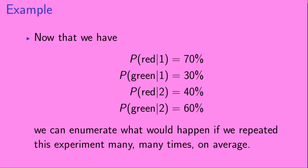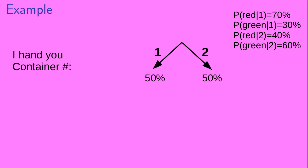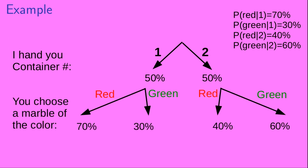Now that we have those four conditional probabilities, we can enumerate what would happen if we repeated this experiment many, many times on average. We've put those four results up in the upper right-hand corner because we'll need them in a minute. Out of all of the trials, I hand you container 1 50% of the time, and I hand you container 2 50% of the time. Of those instances in which I hand you container 1, you choose a red marble 70% of the time and a green marble 30% of the time. Of those instances in which I hand you container 2, you choose a red marble 40% of the time and a green marble 60% of the time.